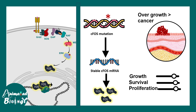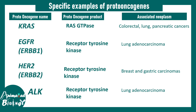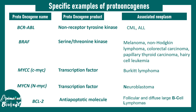Now we understand how gain-of-function mutations in proto-oncogenes lead to cancer formation, and how several aspects of cell signaling and division go wrong — looking at RAS, EGFR, ERBB1, ERBB2, ALK, BCR-ABL, BRAF, and CMYC. Finally, BCL2 is a regulator of the apoptotic pathway — it is an anti-apoptotic factor that prevents apoptosis and thereby promotes cell survival. Too much cell survival drive can also lead to cancer, representing a different but important flavor of the diverse biology associated with proto-oncogenes.